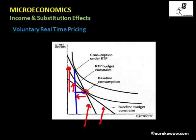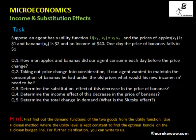We conclude our discussion on income and substitution effects. We have discussed income and substitution effects graphically, mathematically, and through a number of examples. Before we close, there is a small task: suppose an agent has a Cobb-Douglas utility function U equals X1 times X2. The initial prices of both goods and the consumer's income are given. The price of bananas falls from $2 to $1. First question: how many apples and bananas did the agent consume before the price change? Write down the budget constraint, set up the Lagrangian function, and find the demand functions for apples and bananas, then substitute the values.